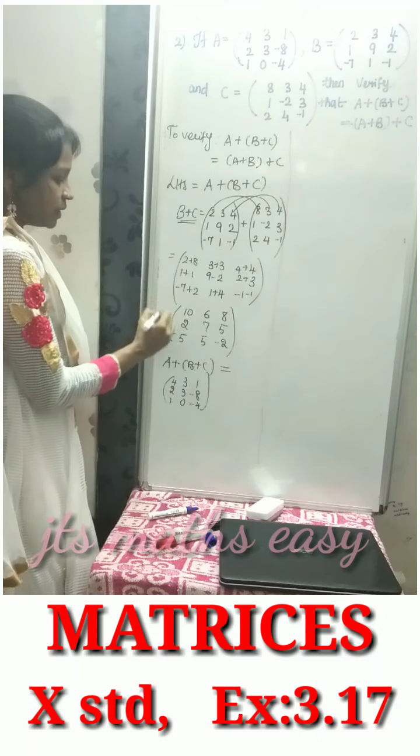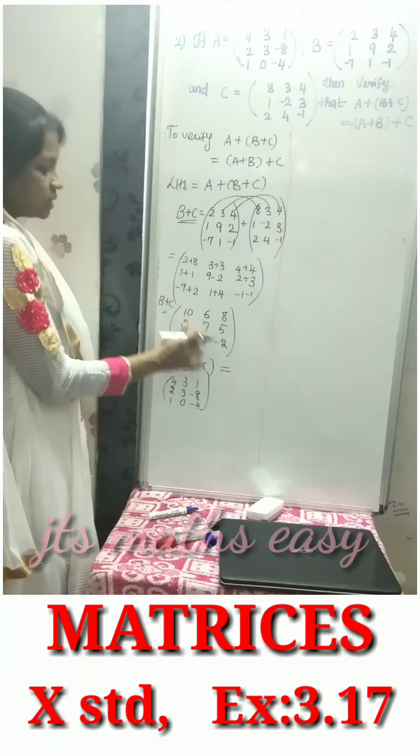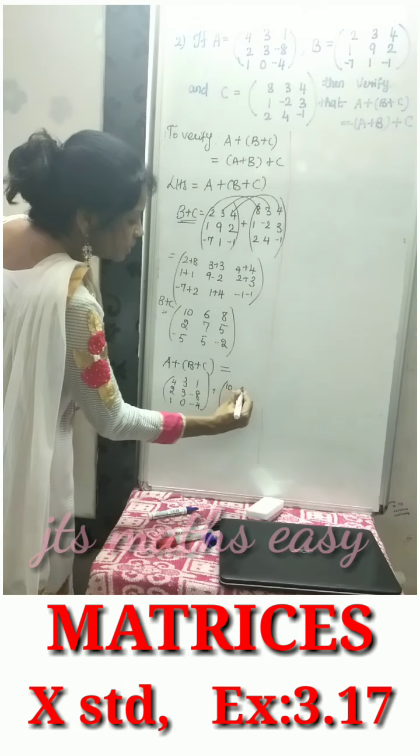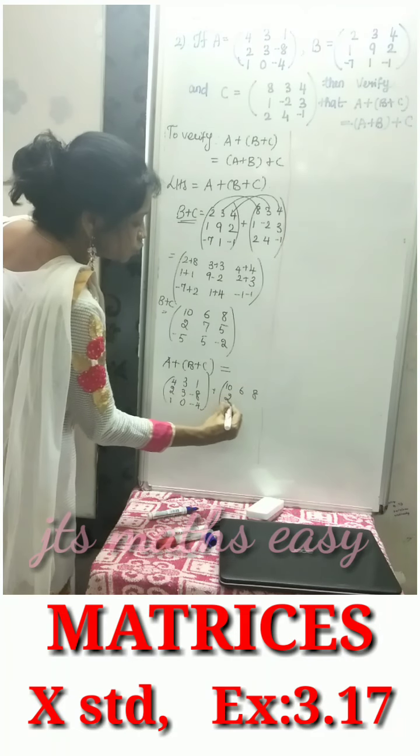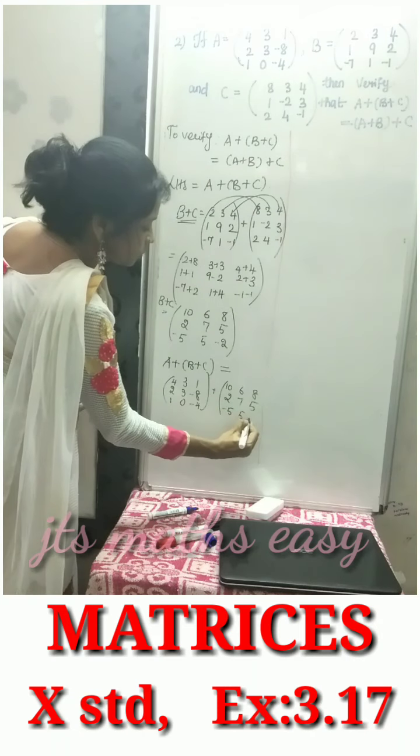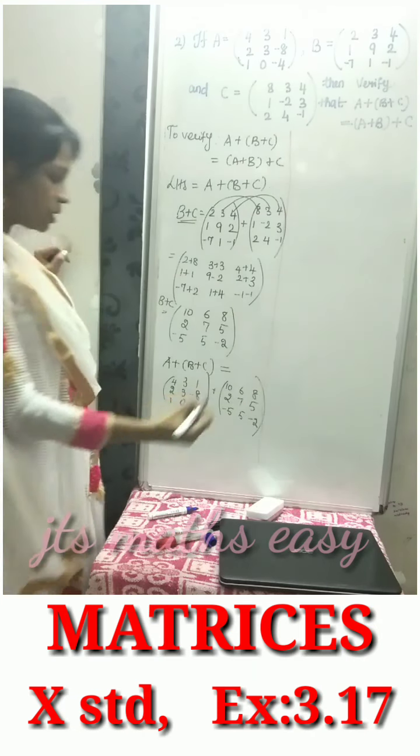This is matrix A. Now B plus C is 10, 6, 8, 2, 7, 5, minus 5, 5, minus 2.